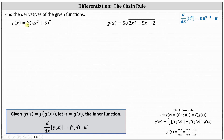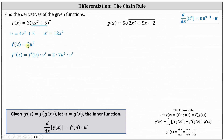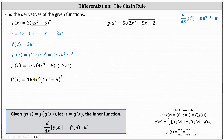For the first example, f of x equals 2 times the seventh power of 4x cubed plus 5. We identify the inner function u equals 4x cubed plus 5, so u prime equals 12x squared. Letting the base equal u, f of u equals 2u to the seventh, and applying the chain rule, f prime of x equals f prime of u times u prime. f prime of u is the derivative of 2u to the seventh, which is 2 times 7u to the sixth, times u prime. Replacing u with 4x cubed plus 5 and u prime with 12x squared, and simplifying, 2 times 7 times 12x squared equals 168x squared, giving f prime of x equals 168x squared times the sixth power of 4x cubed plus 5.